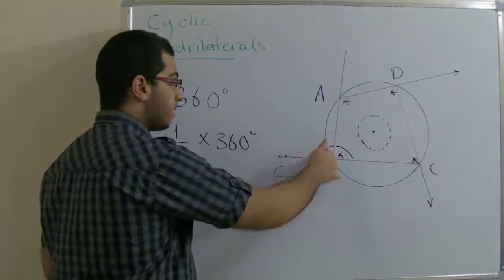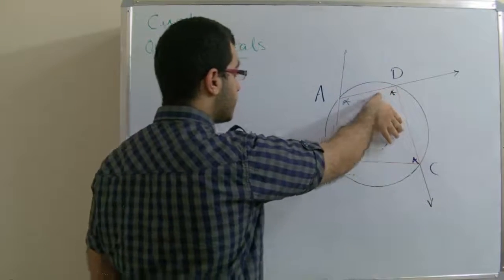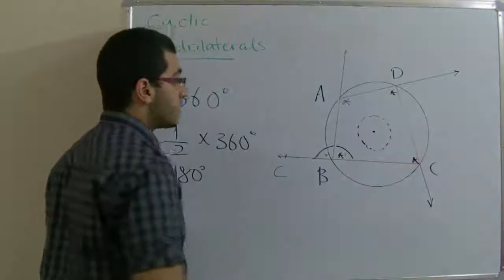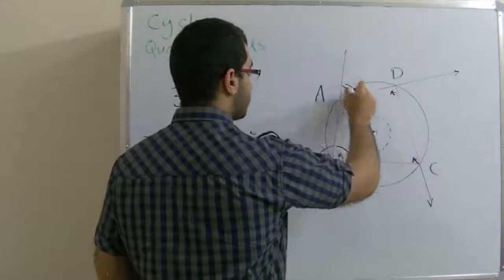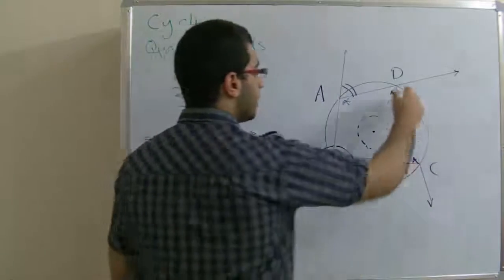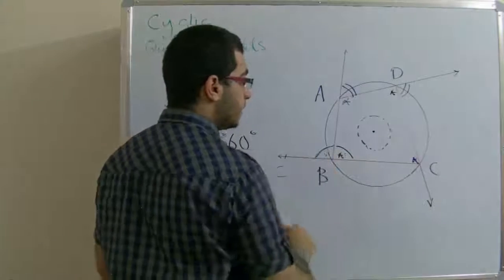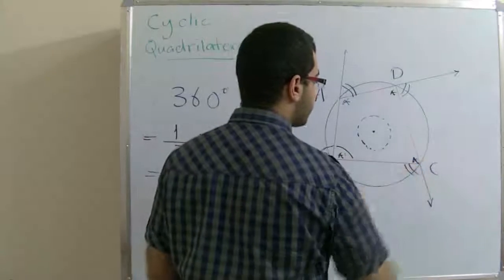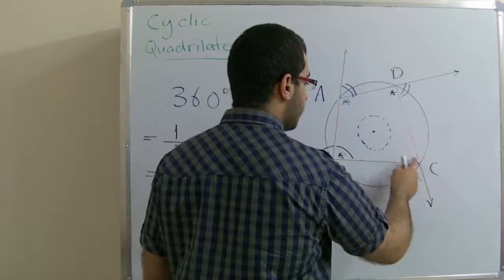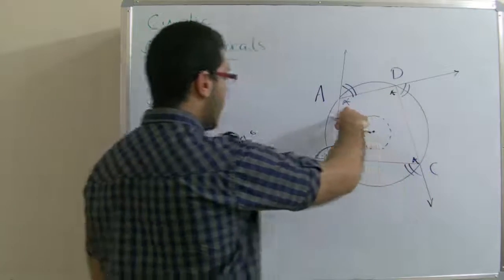The exterior angle equals the angle opposite to it inside the cyclic quadrilateral. This angle equals angle C. This angle here equals angle B. This angle here is supplementary with angle C, so it equals angle A.